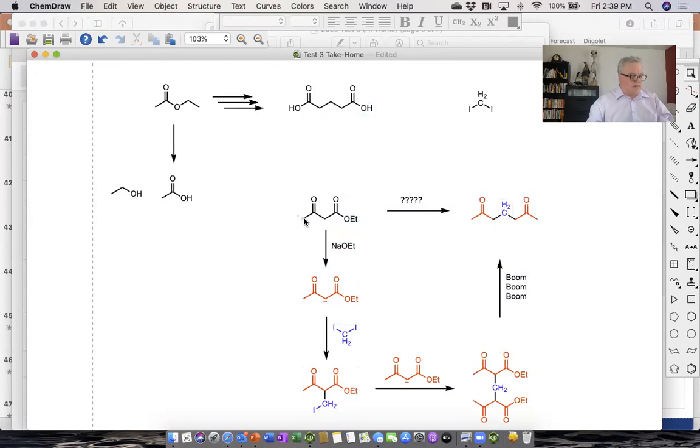So if we start off with this react, this with an ET here, ethyl group, O-E-T. This is the malonic acid ester synthesis. So you have to somehow get to malonic acid ester.